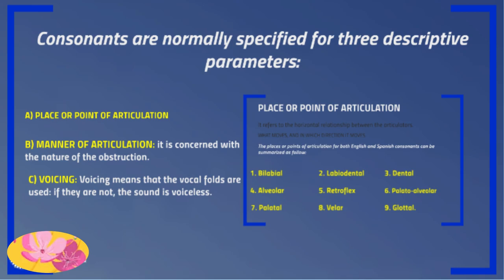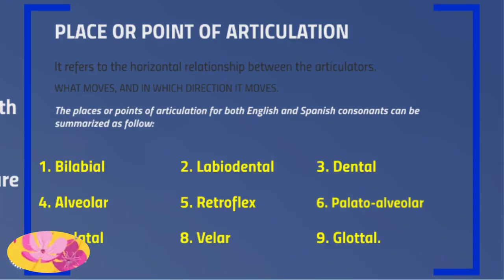Now we are looking into the place or point of articulation. There are nine types. The place of articulation refers to the horizontal relationship between the articulators — what moves and in which direction it moves. Some of them are: bilabial, labiodental, dental, alveolar, retroflex, palatoalveolar, palatal, velar, and glottal.